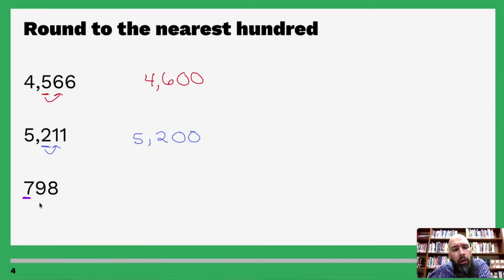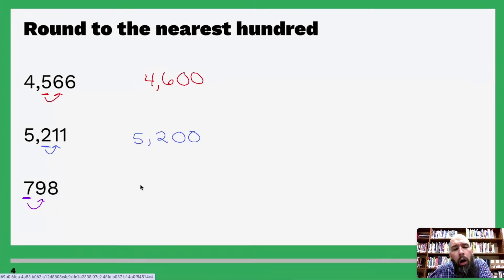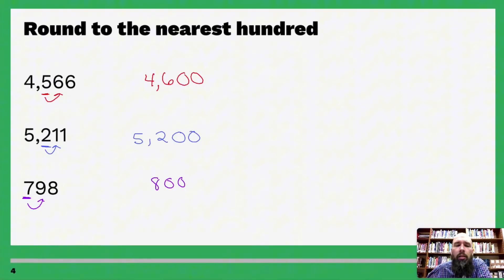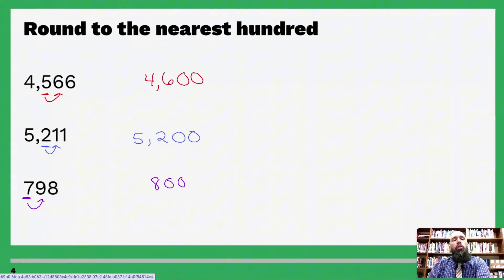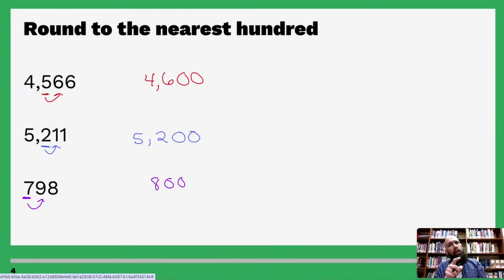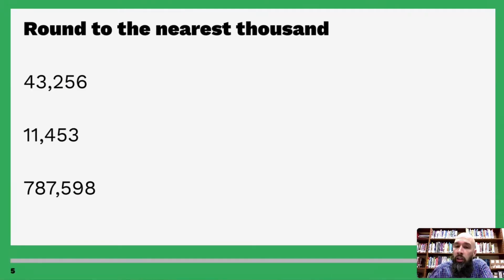Round to the nearest hundred — ones, tens, hundreds. Look to the right of it. Nine is five or above, so you move up: the nine and the eight become zeros, and the seven moves up to eight. Everything to the right becomes zeros, and if that number is five or above, the rounding digit gets one higher; if it's four or below, it stays the same.